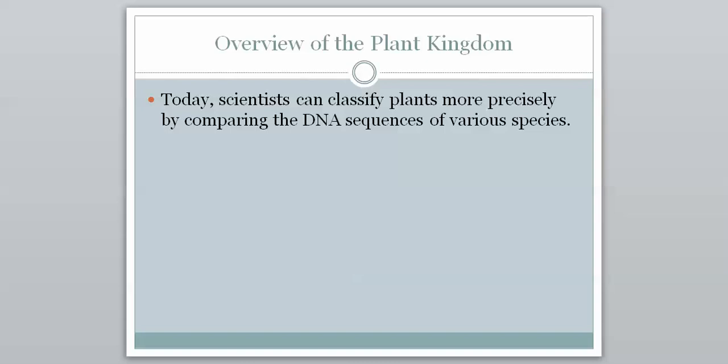Today, scientists classify plants more precisely by comparing the DNA sequences of various species. This is something we should know now — it's become standard that we look at DNA. We're going to get into each of these four groups more specifically. If you have any questions, let me know.